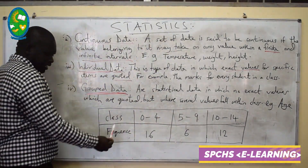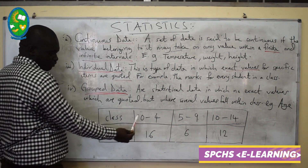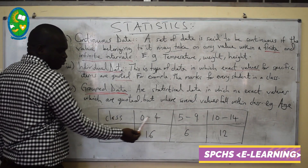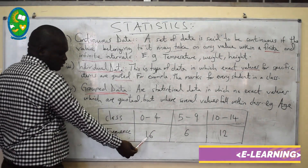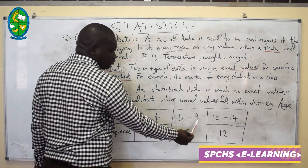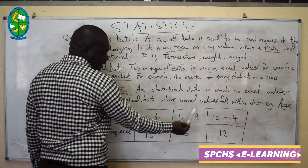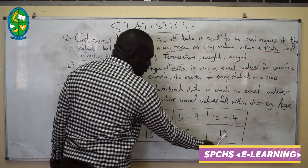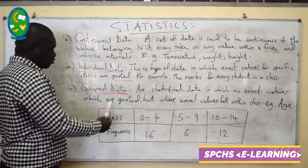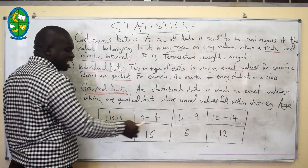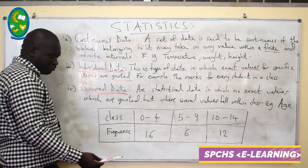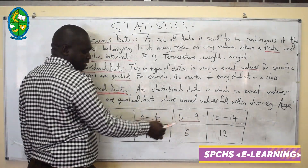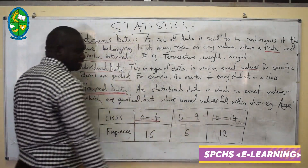For example, if you have a class of 0 up to 4, the frequency — meaning the total number in that interval — is 16. We have 5 up to 9 with 6 numbers in that interval. We have 10 up to 14 with 12 numbers. So when we talk about grouped data, we talk about class intervals: 0–4 is the first class, 5–9 is the second class, 10–14 is the third class.